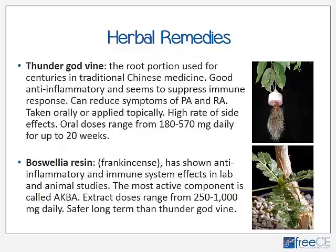A decent herbal remedy for both psoriasis and rheumatoid arthritis is thunder god vine, whose root has been used for many centuries as an important part of traditional Chinese medicine. It is a very good anti-inflammatory and seems to suppress immune response, which is why it is used for autoimmune conditions. It can reduce symptoms of PA and RA quite well, and can be taken orally or applied topically. However, there are high rates of side effects including nausea; oral doses range from 180 to 570 milligrams daily for up to 20 weeks, and it is not meant to be taken long-term.